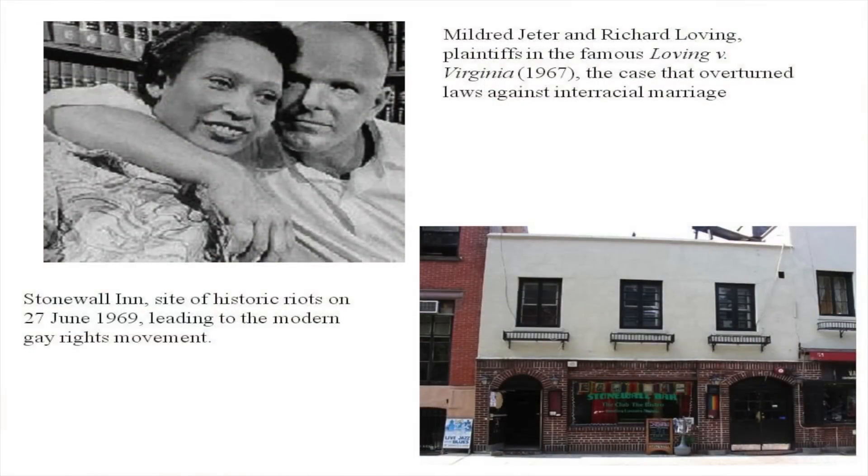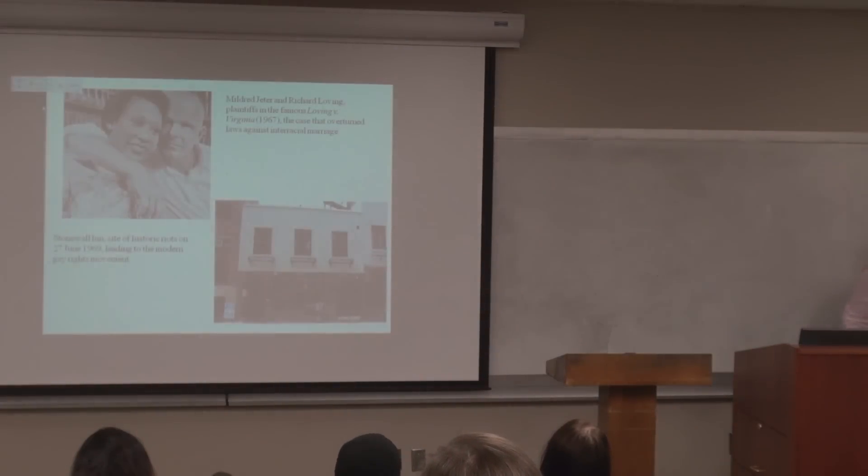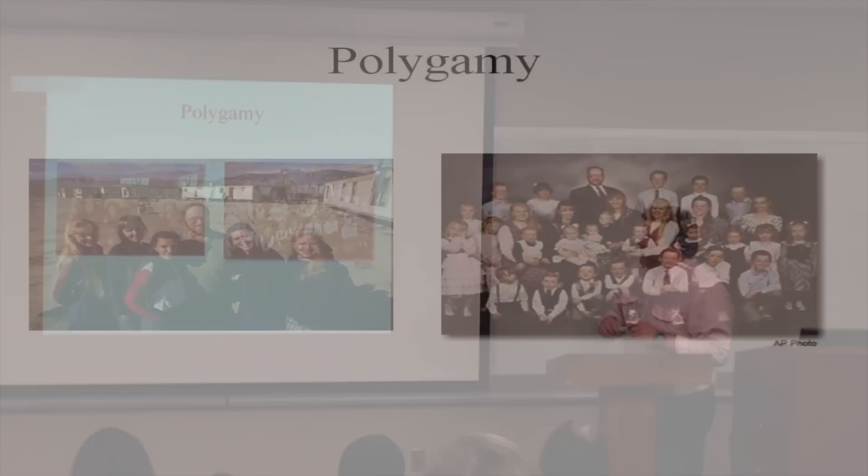So, our culture's had issues with homosexuality for many, many, many, many, many years. This is Stonewall Inn, the famous place of riots that took place in 1969, dealing with gay rights. We've had other issues, obviously, with polygamy.